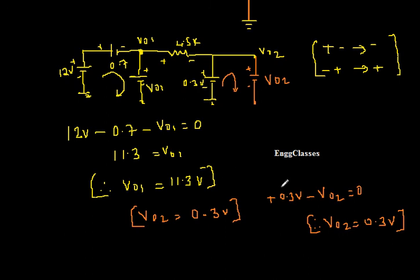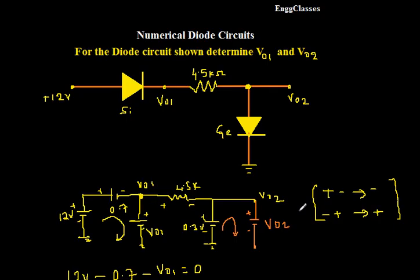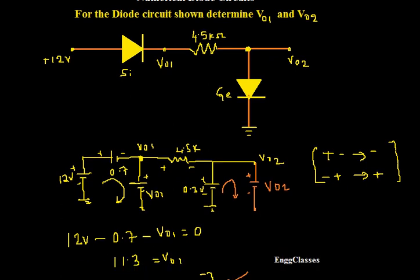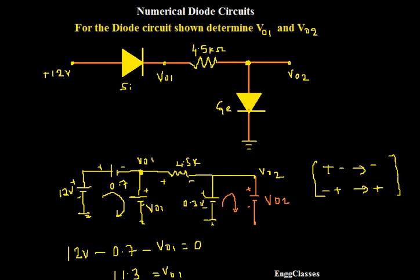Now I got both the answers V01 as 11.3 volt and V02 as 0.3 volt. So this is how I find two output voltages, V01 and V02 in this numerical. Hope you people have understood. If there are any doubts, please let me know in the comment section. I would definitely address those doubts. Meanwhile, subscribe to our channel NG Classes for more videos on basic electronics. Till then, thank you everyone for watching.